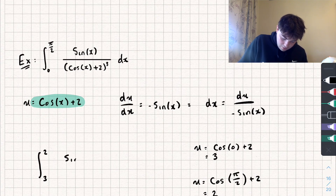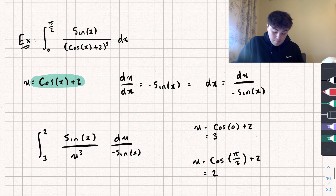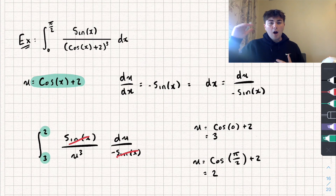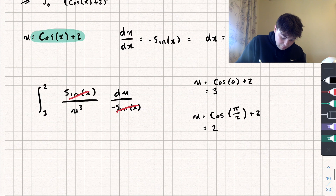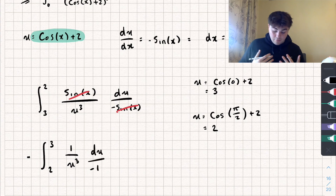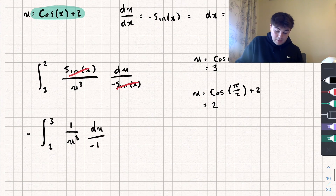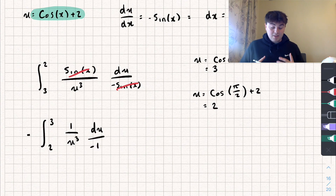We have sin x divided by u cubed with respect to u divided by negative sin x. The sin x's cancel. However, the upper limit (2) is smaller than the lower limit (3). We can fix that by putting a negative in front of the integral, which allows us to flip the limits. So we have negative the integral between 2 and 3 of 1 over u cubed, divided by negative 1.